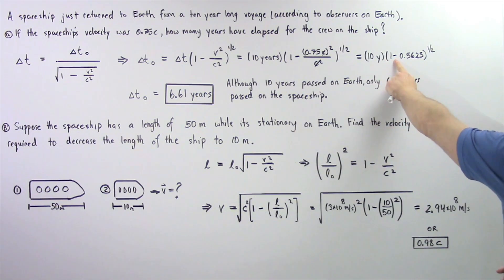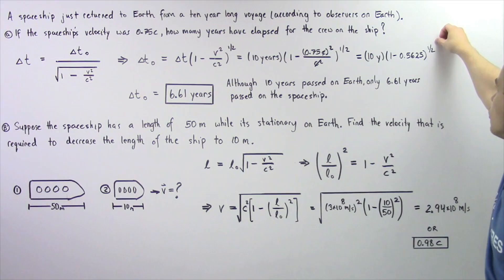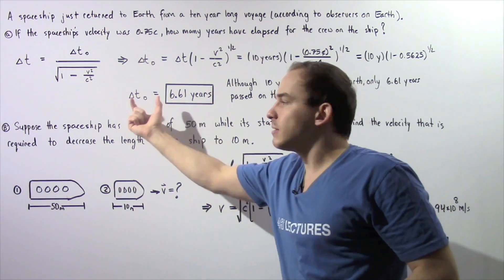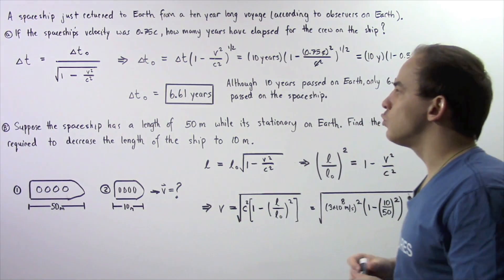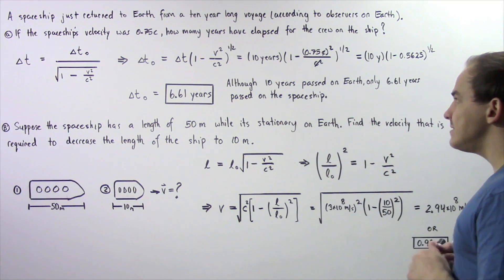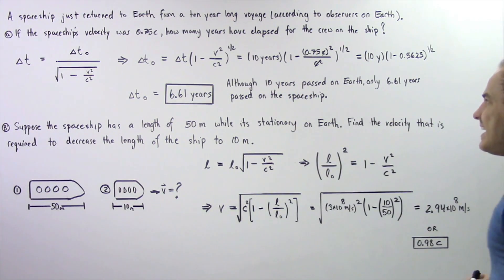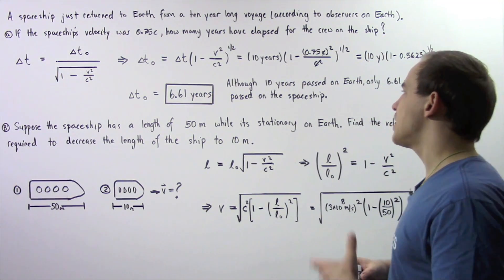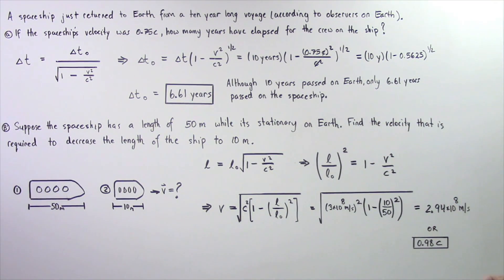So 1 minus 0.5625, then we square root that and multiply by 10 years, and we get that the proper time is equal to about 6.61 years. Although 10 years have passed for the people on Earth, only 6.61 years have passed on that spaceship.